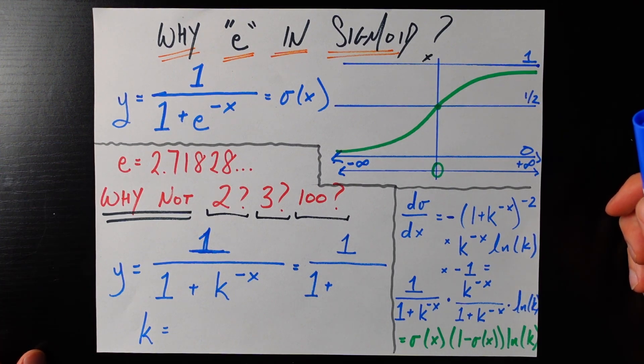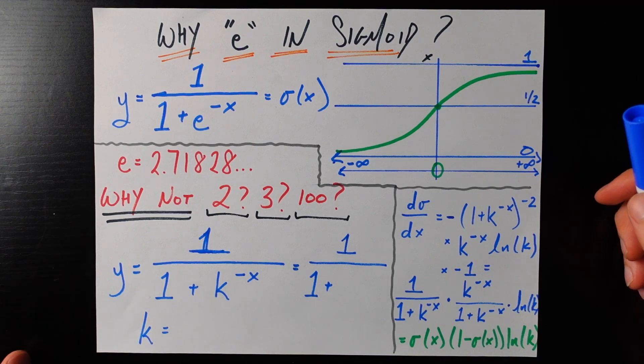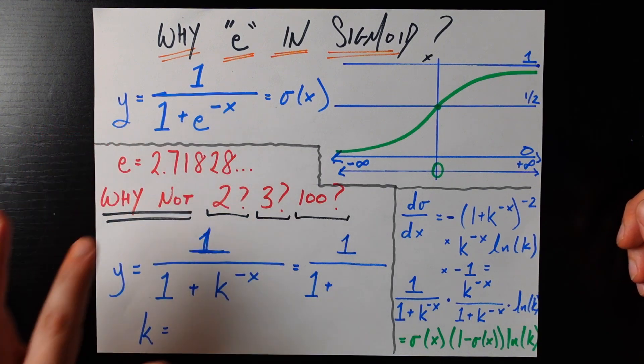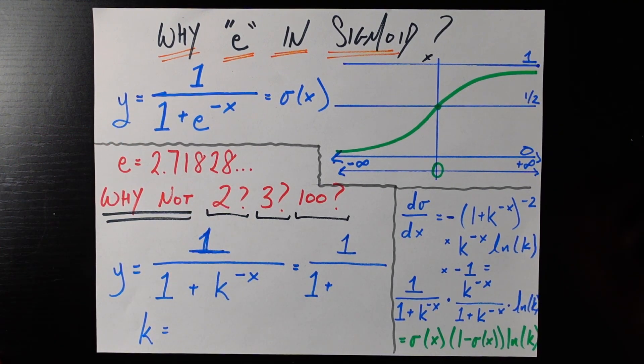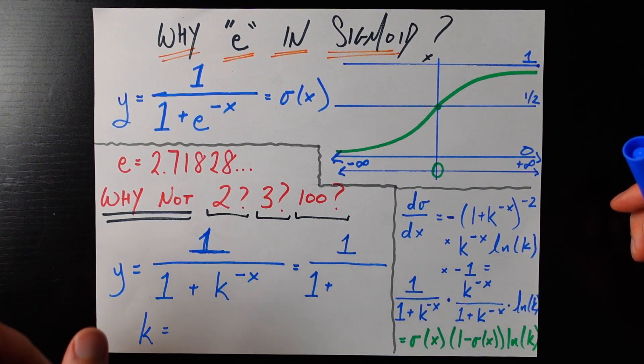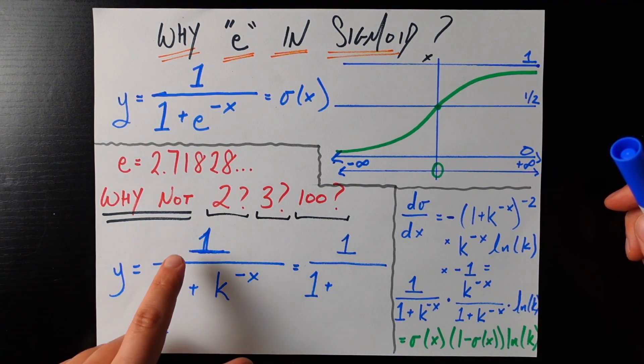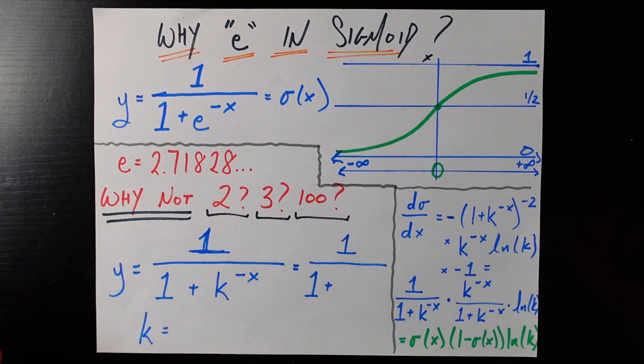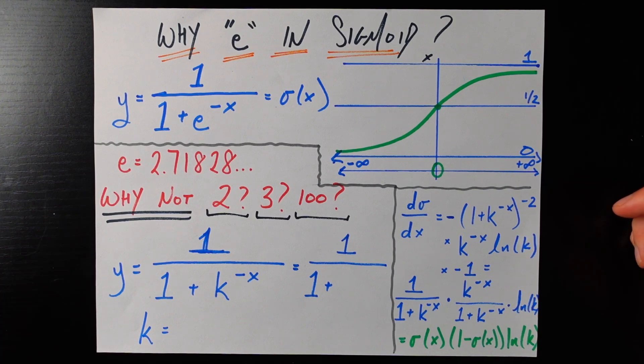So let's just see what happens if we just use some arbitrary number k instead of this e thing which is not a very nice number just looking at it 2.71828 dot dot dot. Why would we use that? Well let's just pretend we don't. So let's say our sigmoid, our new sigmoid function is equal to 1 over 1 plus k, whatever number k that you want, to the power of negative x.